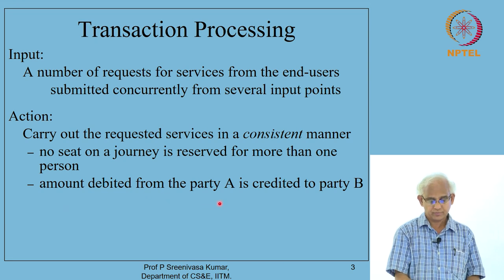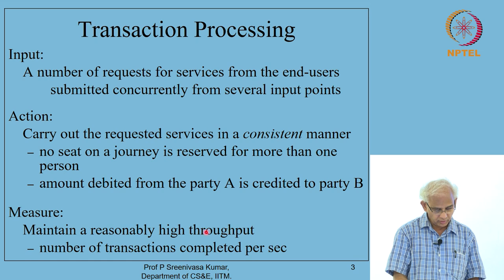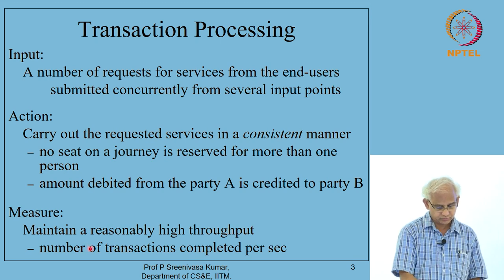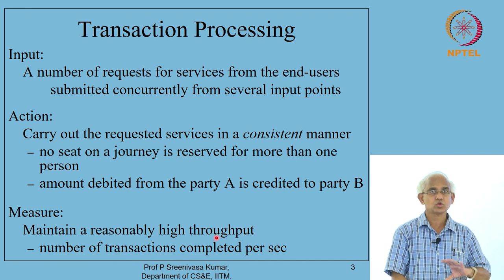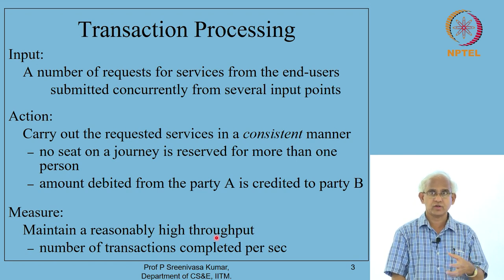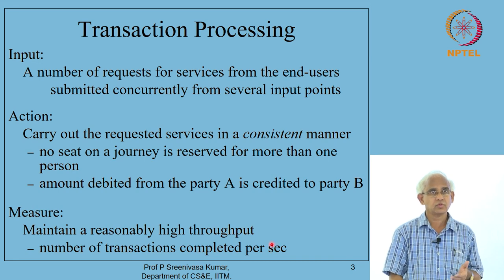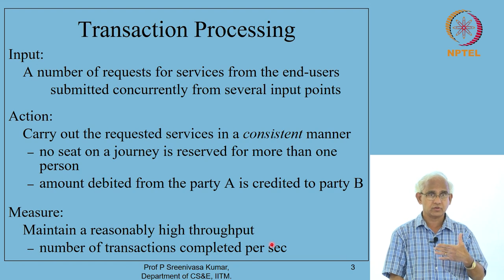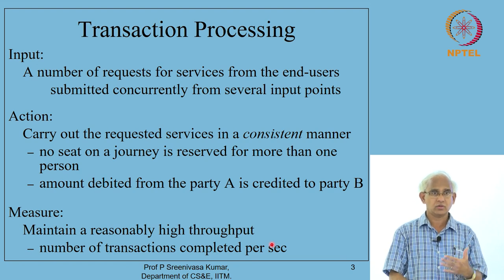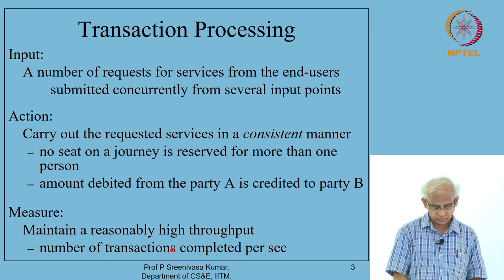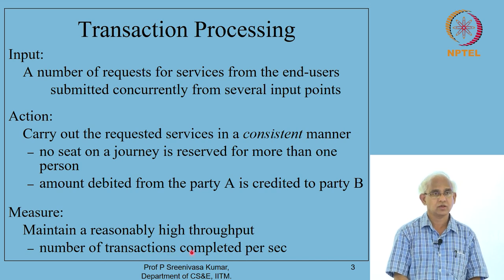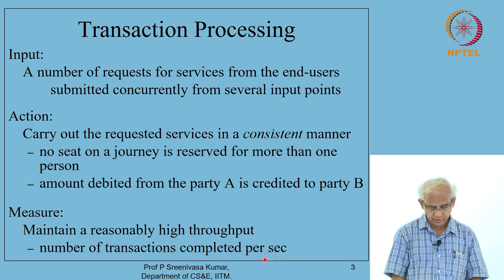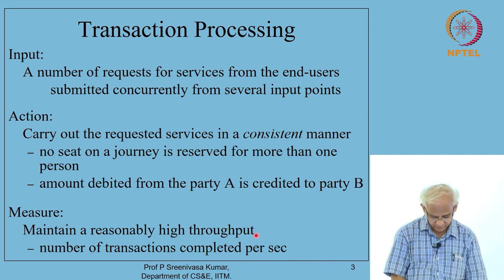The amount debited from party A is to be credited to party B if there is a transfer from A to B. The measure of performance is to maintain a reasonably high throughput — throughput being the number of transaction invocations completed in unit time by the server. This decides the response time: when you as an end user invoke some of these things, will you be made to wait for a long time? We try to maintain a high throughput.